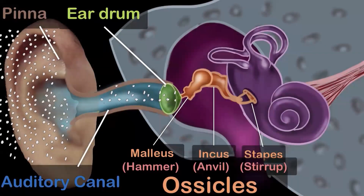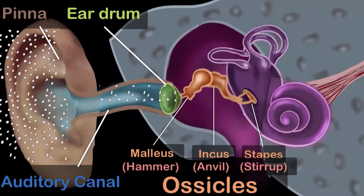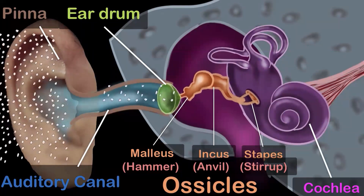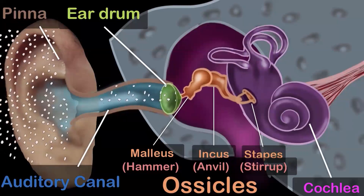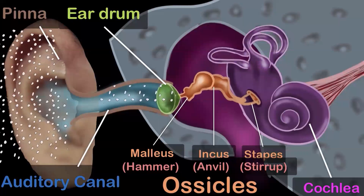This brings us to the inner ear — a bony structure shown in purple. The top part has three semicircular rings that help maintain our balance, but they are not involved in hearing. The part involved in hearing is the snail-like structure called the cochlea. Although the bones have been vibrating, nothing gets heard until vibrations are converted to electricity and sent to the brain — and that is exactly what the cochlea does.